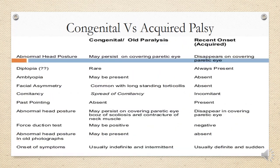Now, how do we differentiate congenital (old) palsy from acquired (new) palsy? Regarding abnormal head posture: in congenital cases it persists even when you cover the paralytic eye, because the body has adapted and maintains that posture to sustain single vision. In acquired or recent-onset palsy, however, covering the affected eye causes the head to return to a normal posture, as the patient has not yet fully developed the abnormal head posture.